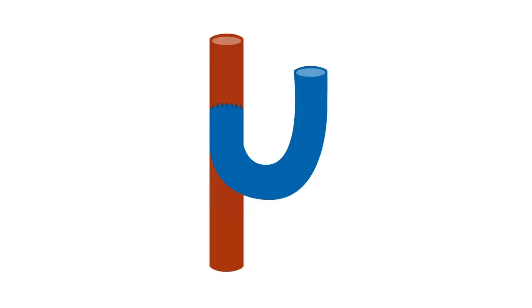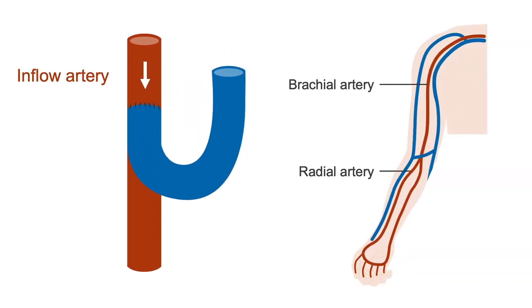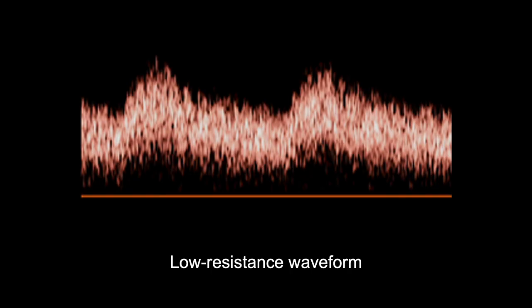Next, waveforms are obtained from the inflow artery, so either the brachial or the radial artery, approximately 2 cm proximal to the anastomosis. Remember that if the fistula is patent, the inflow artery waveforms will be low resistance, meaning there is flow during diastole.